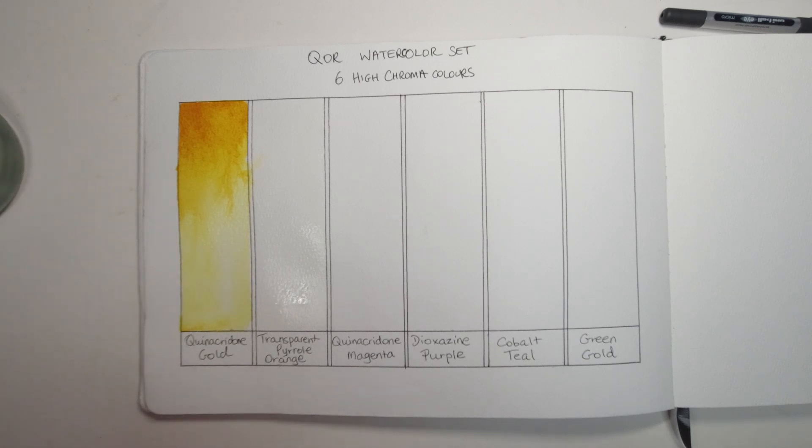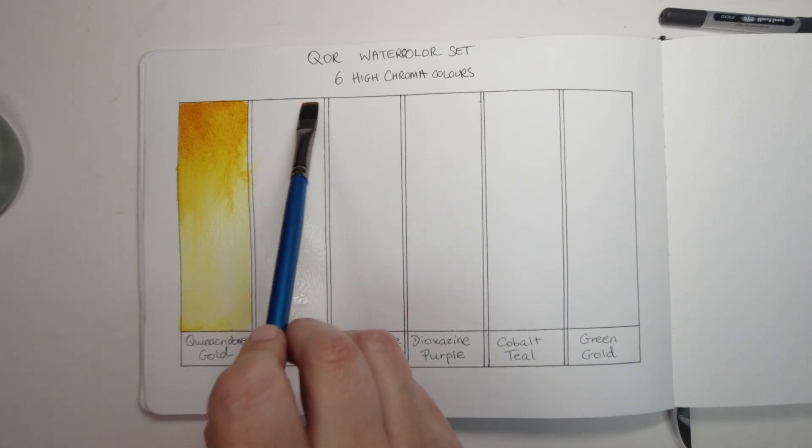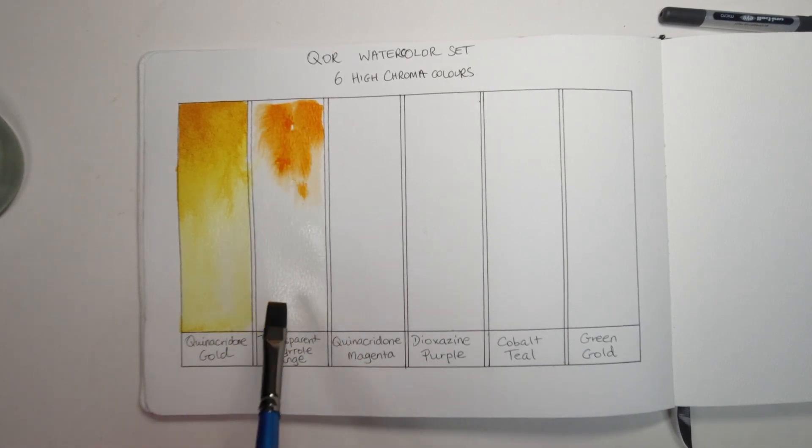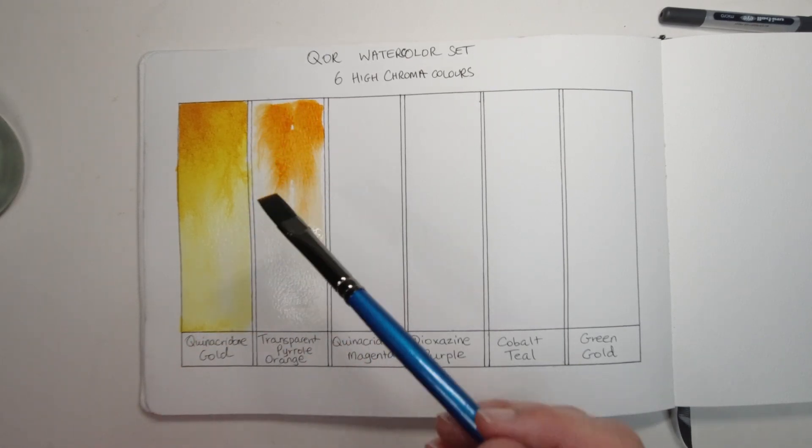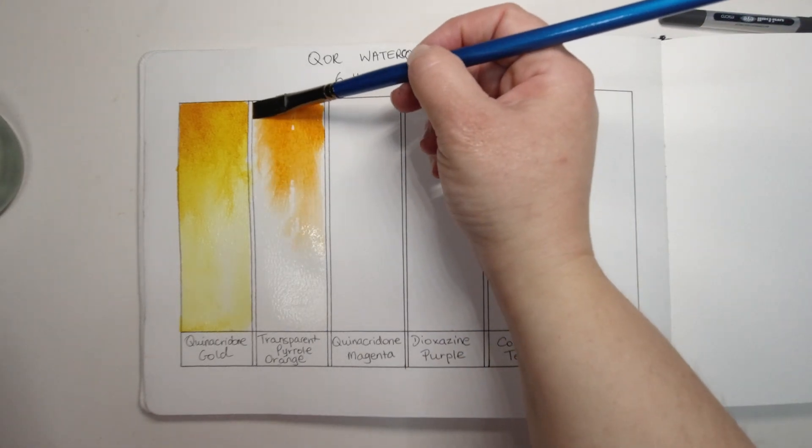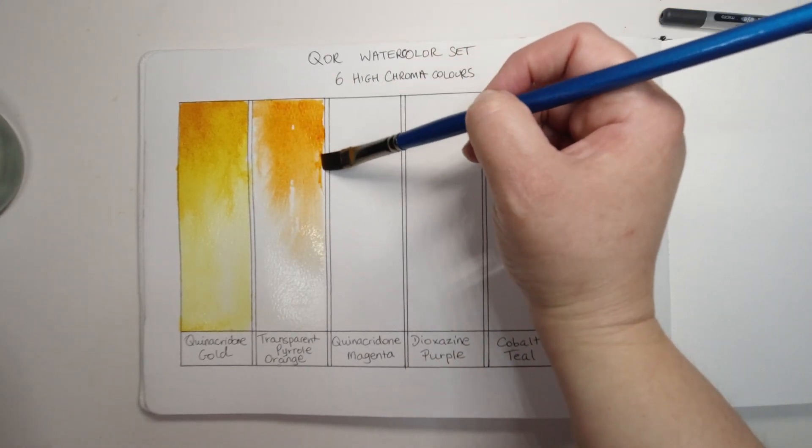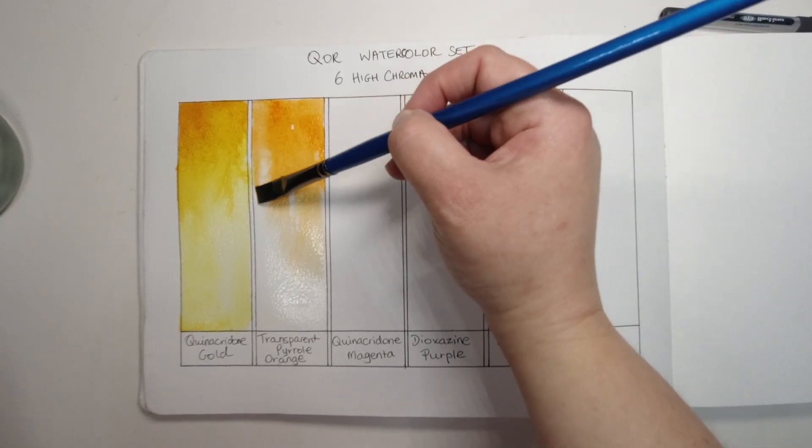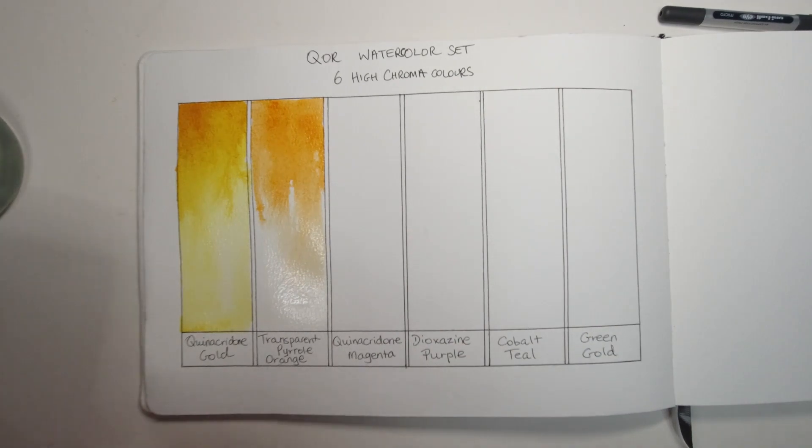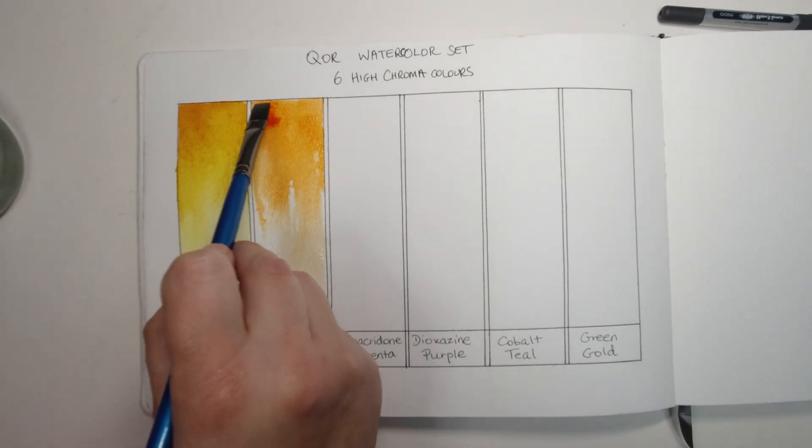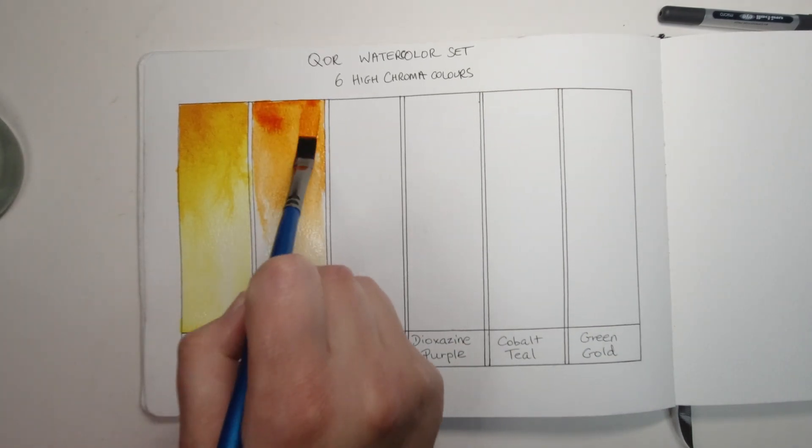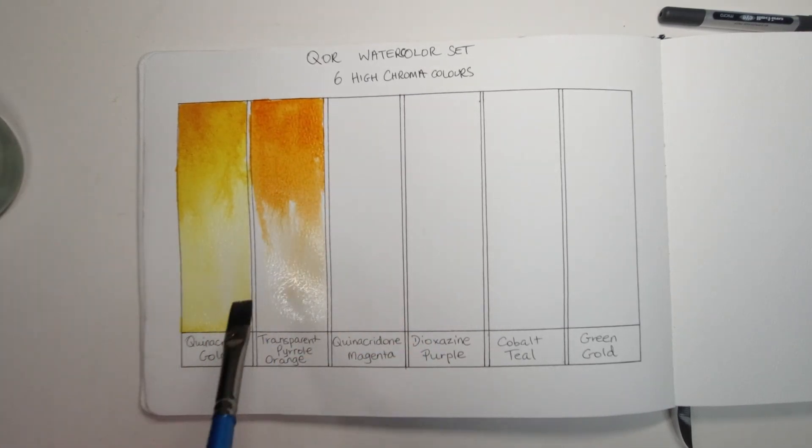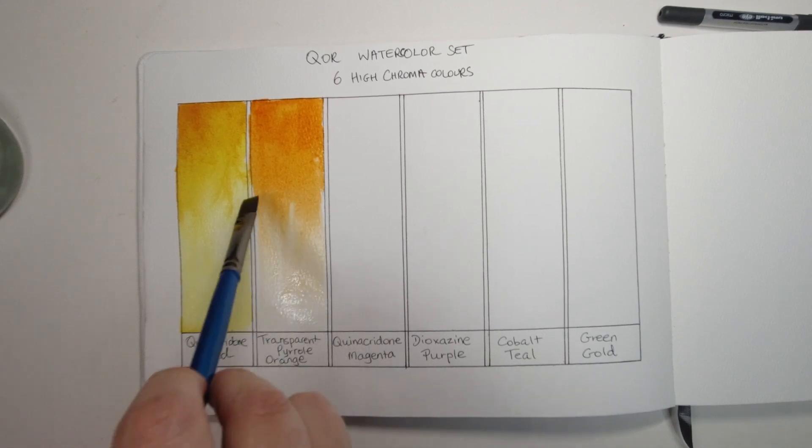Okay going to the next one, transparent pyrrole orange. This one also is a runner as we can see and I just sort of blobbed a bit on so you can see how much it runs just by touching that wet paper. Transparent pyrrole orange is a series 2 color, it's made up of a single pigment PO71. It has good light fastness, is transparent and it's staining. In fact, this one is technically the cheapest paint out of the set being a series 2. Everything else is series 3 or 4.